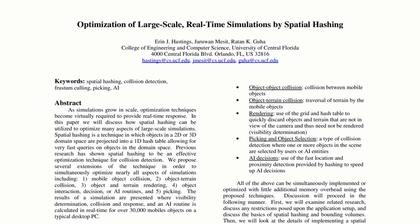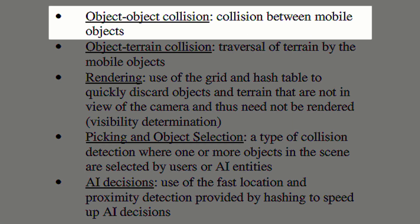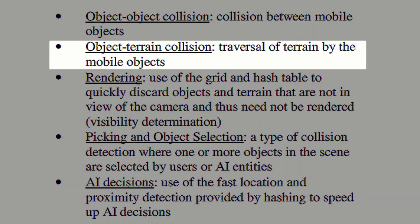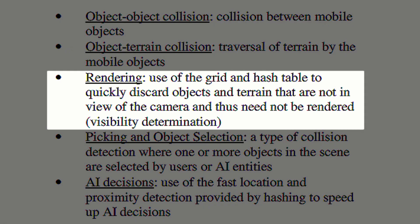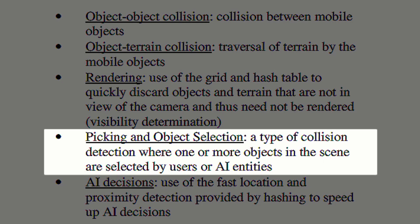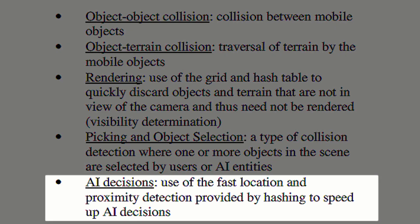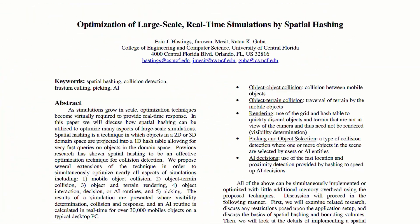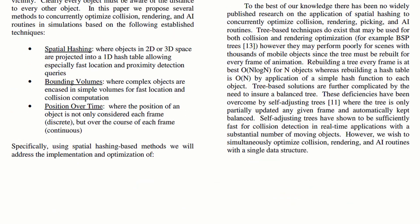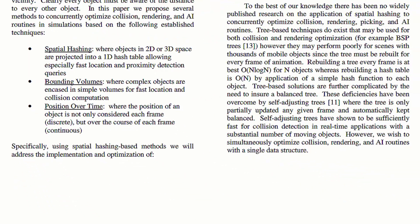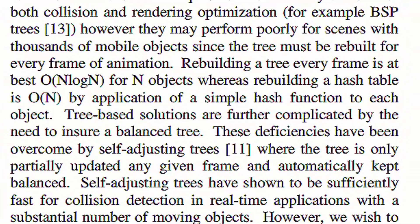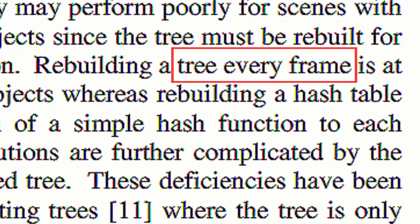This paper has a nice introduction to the topic and it goes into some detail on some of the applications of a spatial hash table and the hash function that it uses. It focuses on a number of different areas ranging from object-to-object collision detection all the way through to AI decision considerations with a focus on proximity and location detection. Our focus is going to be on how spatial hashing allows for objects on a 2D grid to be projected into a one-dimensional hash table.